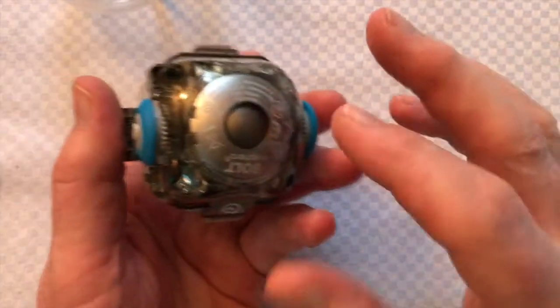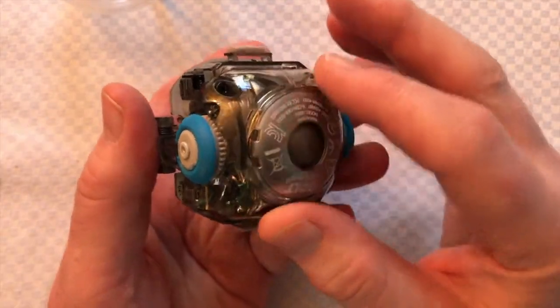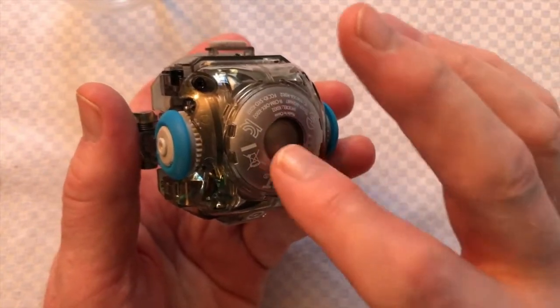There's a couple of drive wheels on the bottom, and then there's this very large lump of metal and a coil, and this is basically for charging the Sphero.